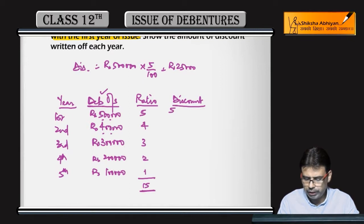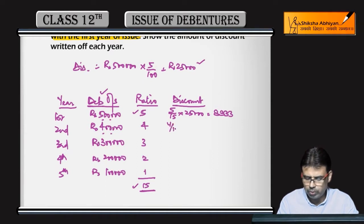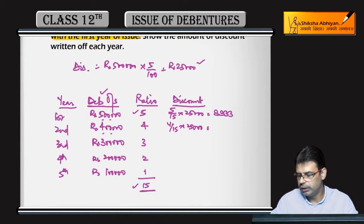First year amount write-off is 5 by 15 into 25,000 which equals Rs. 8,333. Second year is 4 out of 15 into 25,000. Let's calculate this - it comes to Rs. 6,667.